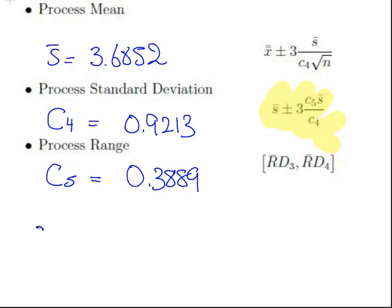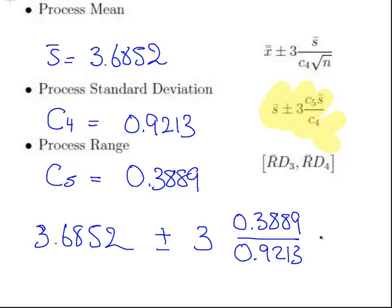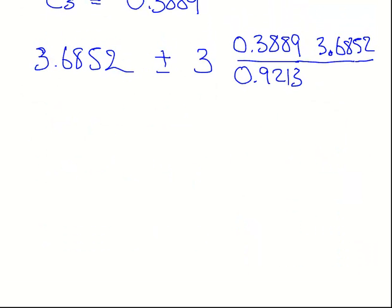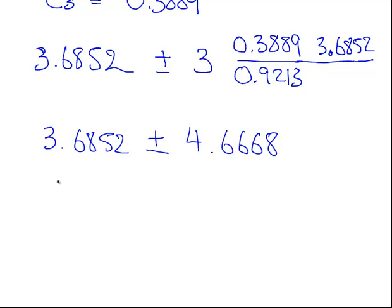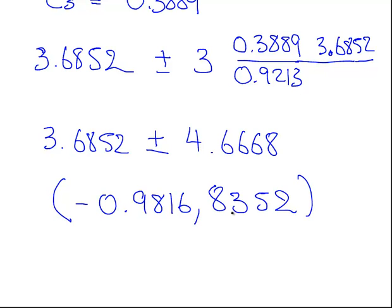Our formula here is S bar equals 3.6852 plus or minus 3 times 0.3889 over 0.9213 times S bar again, which is 3.6852. A little bit of calculator work - I make that to be 4.6668. So that is 3.6852 plus or minus 4.6668, which gives us minus 0.9816 to 8.352.